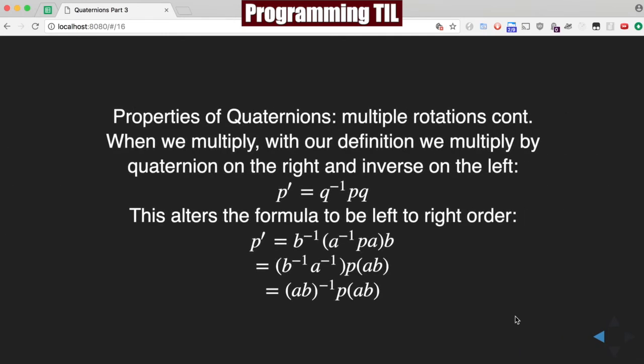So, when we multiply with our new definition, multiplying, we'll put the quaternion on the right and the inverse on the left now. So, P prime is equal to Q inverse PQ as opposed to QPQ inverse. And so, this alters the formula to be everything in the right order. So, when we use our association on this to do multiple, you can see we combine it out here, and then we ultimately end up with A, B as opposed to B, A.